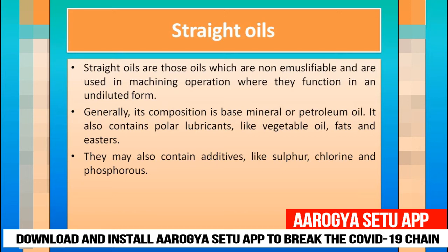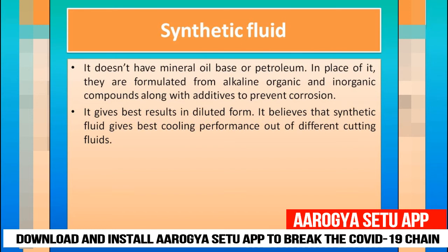Aur isko hum machining operation mein use karte hain, aur undiluted form mein use karte hain. Generally its composition is base mineral ya petroleum oil ka base use karte hain. Aur isme hum polar lubricants like vegetable oil, fat oil ya ester ka use karke iska composition tayyar karte hain. Toh basic jo base hota hai isme mineral ya petroleum oil hota hai. Yeh may also contain additives - isme kuch additives bhi use karte hain jaise aapka sulfur, chlorine ya phosphorus. Toh yeh sare milakar ek mixture tayyar karte hain jisko hum straight oils bolte hain.